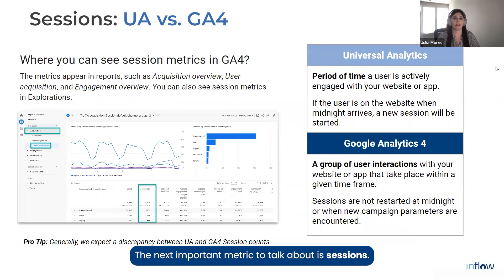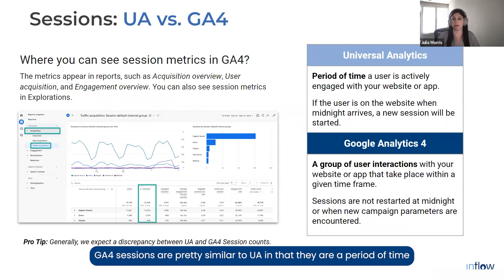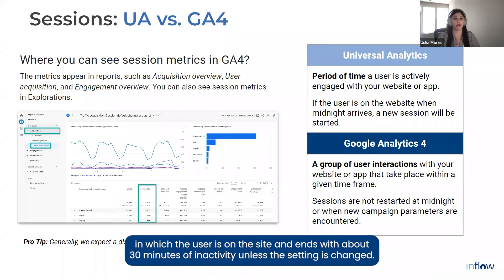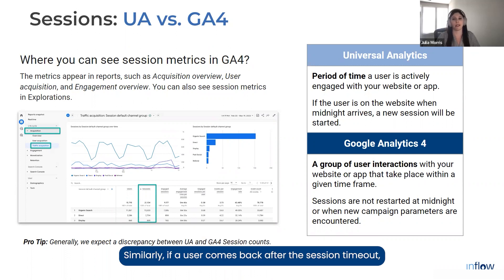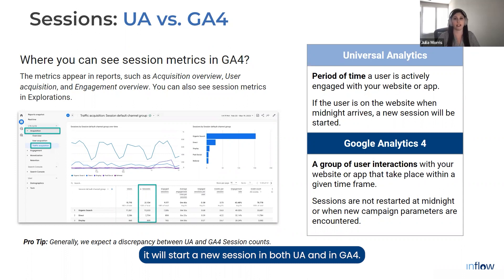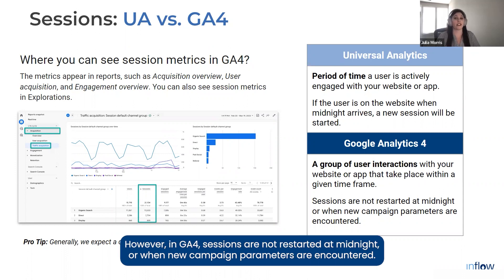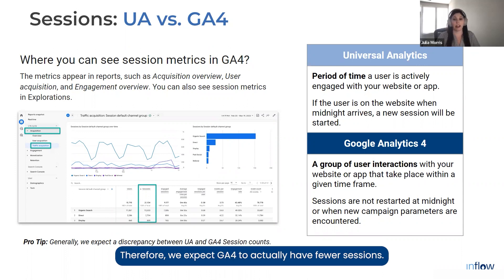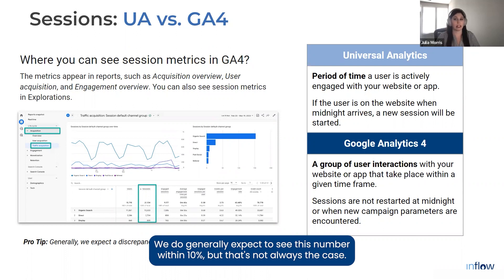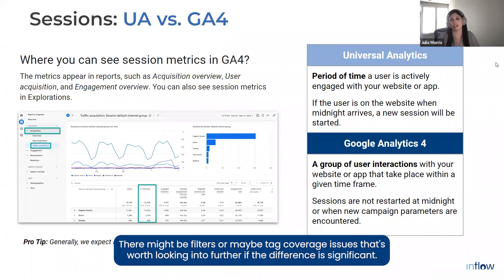The next important metric to talk about is sessions. GA4 sessions are pretty similar to UA in that they're a period of time in which a user is on the site and ends with about 30 minutes of inactivity unless the setting is changed. Similarly, if a user comes back after the session timeout, it will start a new session in both UA and GA4. However, in GA4 sessions are not restarted at midnight or when new campaign parameters are encountered. Therefore, we expect GA4 to actually have fewer sessions — generally within 10%, but if the difference is significant it may indicate filters or a tag coverage issue worth looking into.